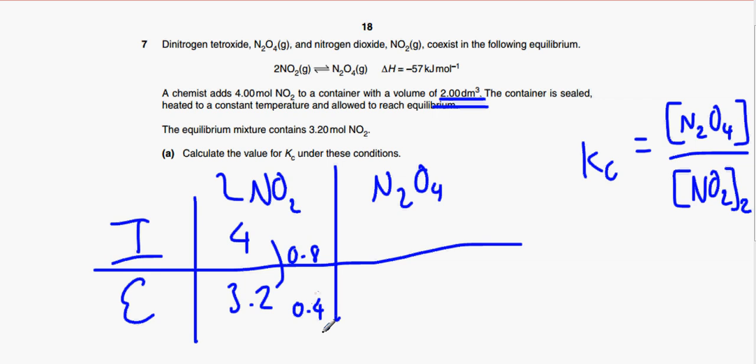So 0.4 times 2 has reacted. Now initially we have no moles of that. And at equilibrium we end up with 0.4 because the molar ratio over here is one to two. So obviously 0.4 moles have reacted here and 0.8 moles have reacted here because that's double.